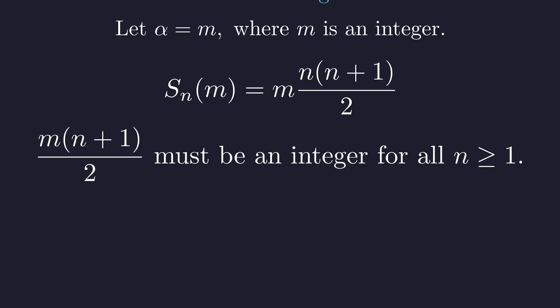Now, if n is an odd number, n plus 1 is even, so the expression is always an integer for any integer m. But if n is even, n plus 1 is odd, which means m must be even to cancel the 2 in the denominator.